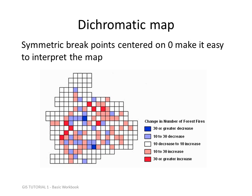Here's a good example of a dichromatic map — in this case, it maps the change in the number of forest fires by units that appear to have been put on a grid. The scale goes from 30 or greater decrease, through a neutral value of roughly 10 decrease to 10 increase in the middle, and then up to a 30 or greater increase.